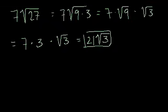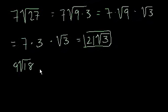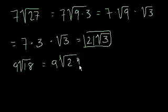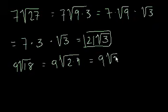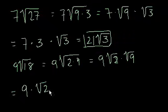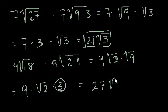What is 9 times the square root of 18? Once again, what are the factors of 18? We have 6 and 3, 1 and 18. None of those are perfect squares, but we also have 2 and 9, and 9 is a perfect square. So that equals 9 times the square root of 2 times 9, which is 9 times the square root of 2 times the square root of 9. That equals 9 times the square root of 2 times 3, which equals 27 times the square root of 2.